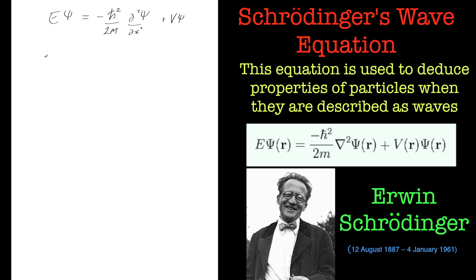If you remember the first part of the previous tutorial, I brought this down: the total energy is broken down into the kinetic energy plus the potential energy of the system. Another way of writing kinetic energy is to say half mv squared. We'll leave potential energy because it's just a single value, v.